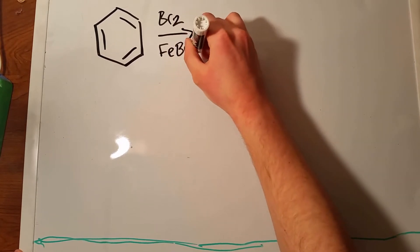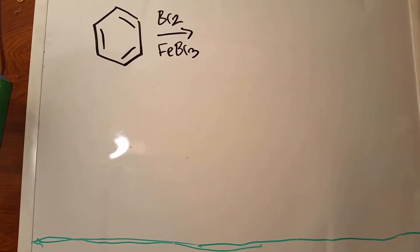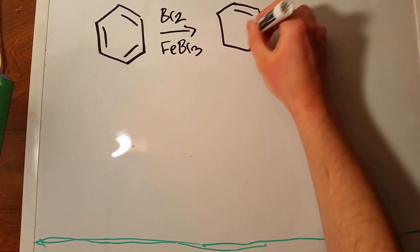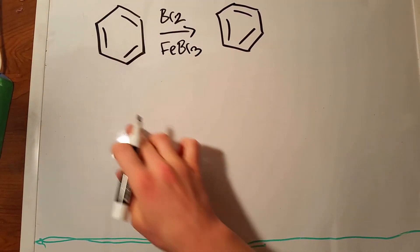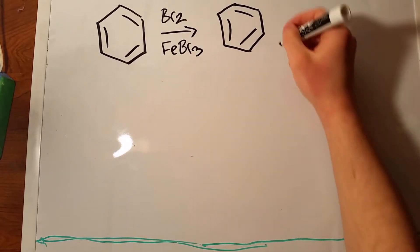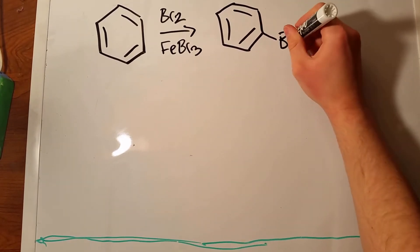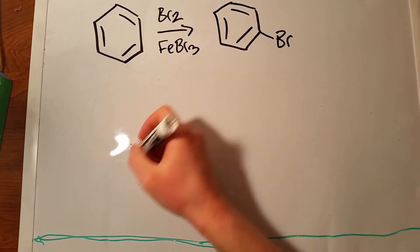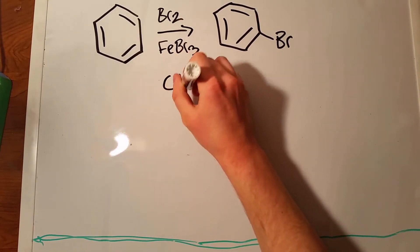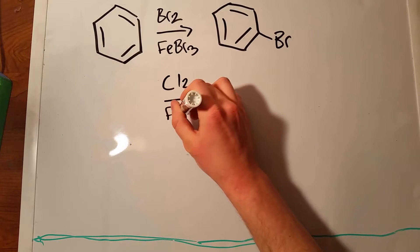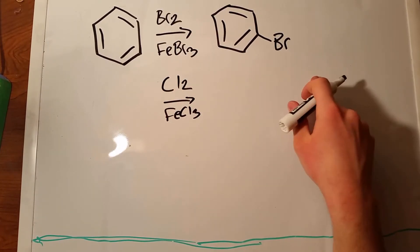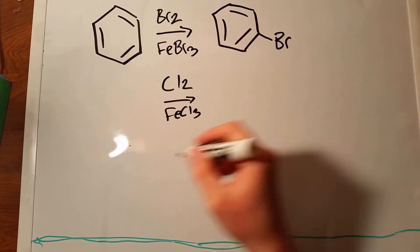Starting off, we have Br2 over FeBr3, and all this does is it adds a bromine to the benzene. Now there is nothing on this benzene, so it doesn't really matter where that bromine goes yet. We'll talk more about when it matters and where things are supposed to go in a little bit. Keep in mind, Cl2 over FeCl3 is the exact same reaction, it's just instead of adding a bromine, you add a chlorine, so you just use what you need based on the question.